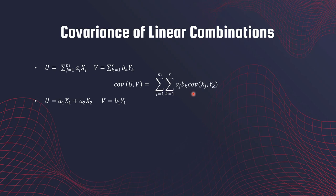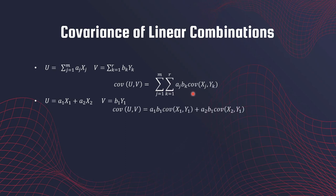Let's take m = 2, so u = a₁x₁ + a₂x₂, and r = 1 so v is just b₁y₁. If we want to write the covariance between u and v, what this formula does is take combinations of each pair of variables from u and v.